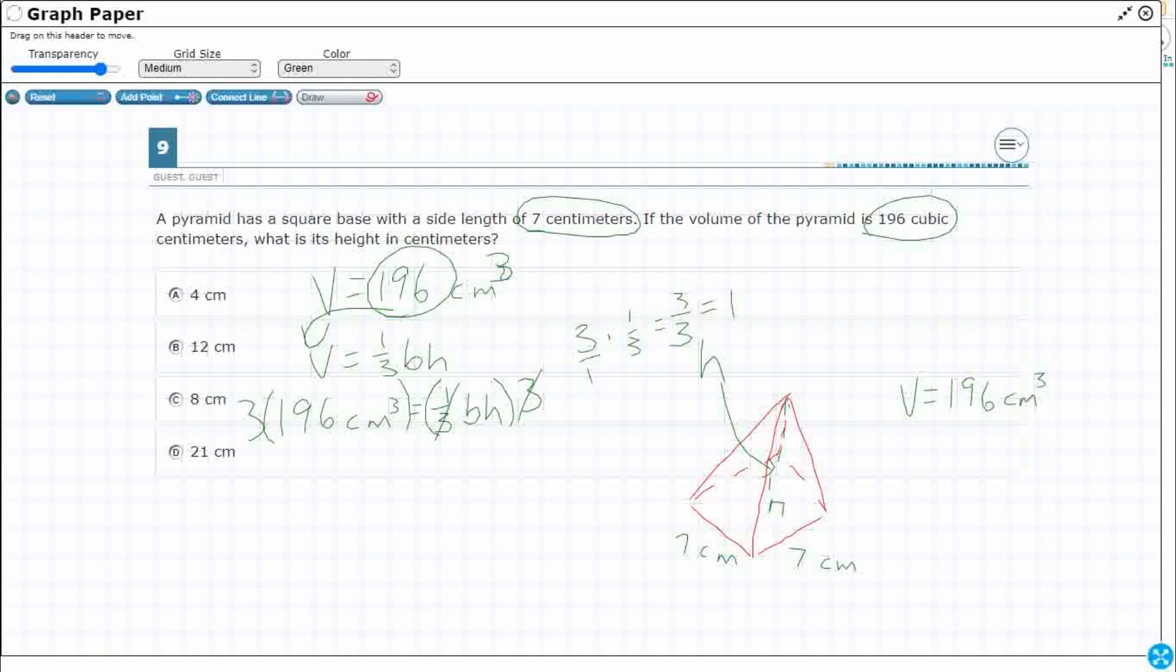So that effectively gets rid of that. So I need to get that 196, let's see what that 196 times three is. That's 18, 27, 28, 588.